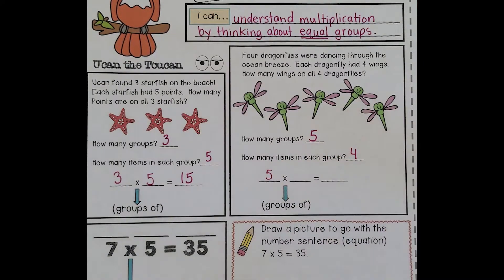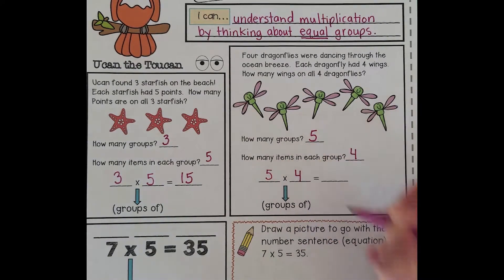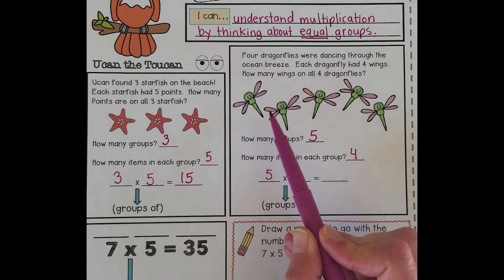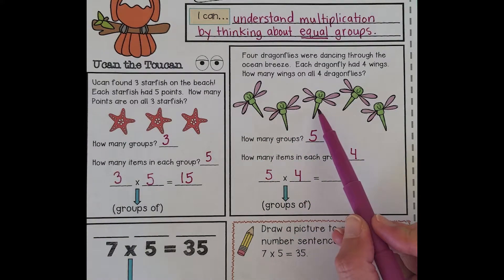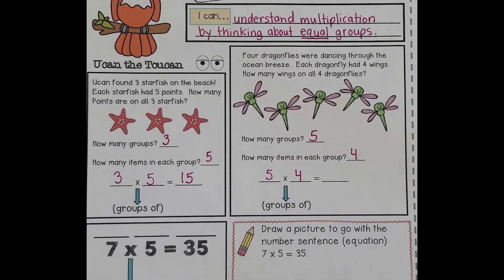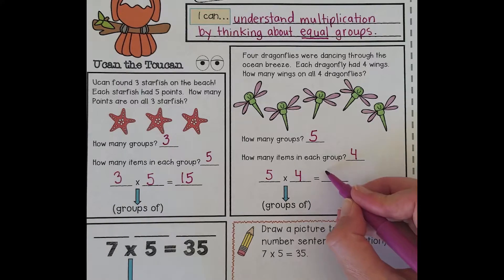I can write my equation or my number sentence that tells the story: five dragonflies, four wings on each, five groups of four. Then I can choose counting, adding, or counting by to help me solve. I'm going to do counting by because that's my personal favorite. 4, 8, 12, 16, 20. I just counted by fours, so now I know that five groups of four must be twenty.